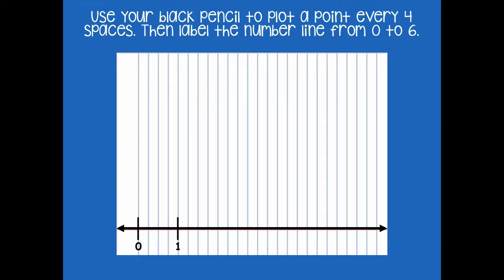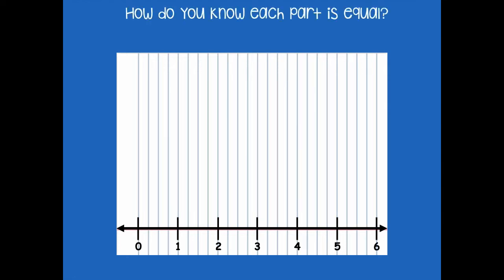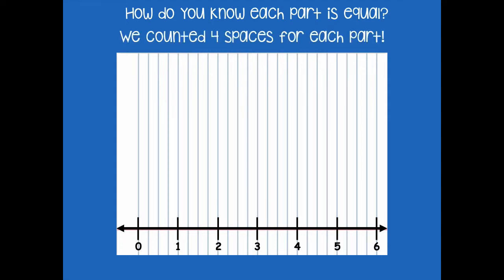This lesson is very similar to the one we did in the last module — using the notebook paper to help us partition equal parts. As we keep going: four more and there's two, four more and there's three, four more four, four more five, and four more and we get to six. How do we know each part is equal? Because we counted four spaces for each part.